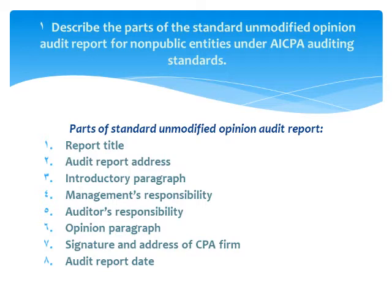Number 5 is Auditor Responsibility, which contains 3 paragraphs. First, the audit was conducted in accordance with auditing standards. Also, the audit is designed to obtain reasonable assurance — not absolute assurance — about whether the financial statements are free of material misstatement, meaning auditors are only responsible for significant misstatements.